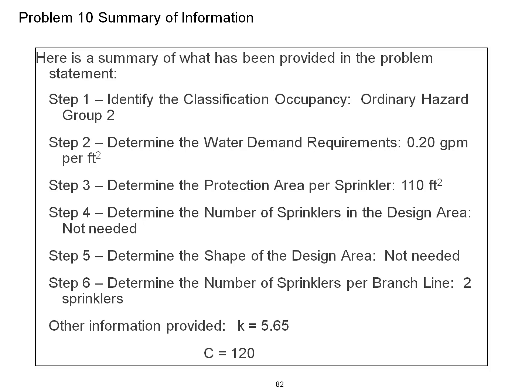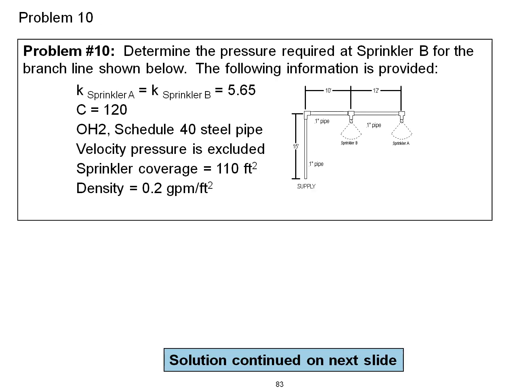Other information provided: K is equal to 5.65 and our C factor is 120. Some added information: this is ordinary hazard group 2, we're using Schedule 40 steel pipe, and velocity pressure is not included.